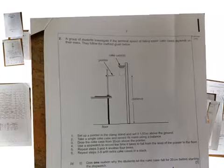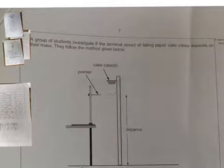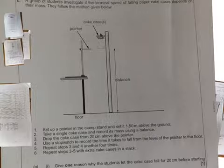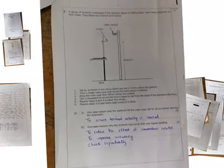Already 8 minutes in, so this might be a 3-parter. A group of students investigate the terminal speed of falling paper cases depending on their masses. They follow a method given. So there's the method. Give one reason why the students let the cases fall 20 centimeters before starting the stopwatch. So there's the point there, that's the point at which you're going to start the stopwatch. Why do they drop it above it? It's to enable it to reach terminal velocity by the time it gets there. They want to ensure that these cases reach terminal velocity and then they start timing because they're measuring the time it takes.